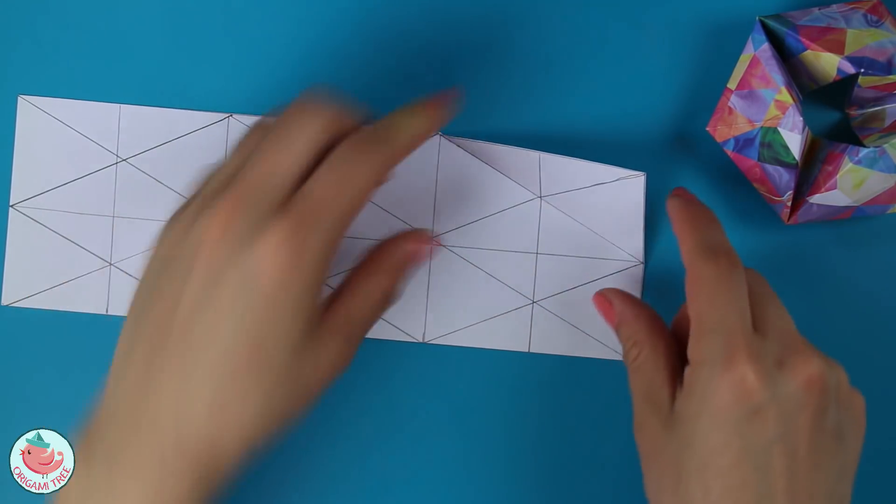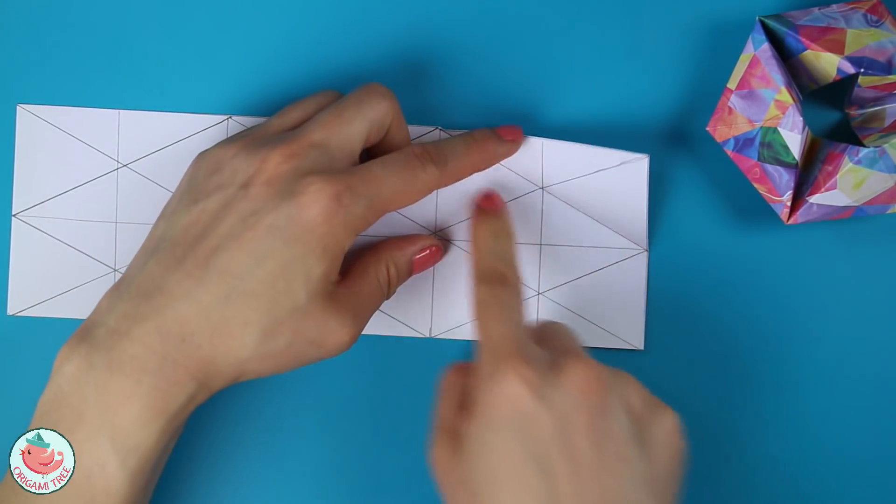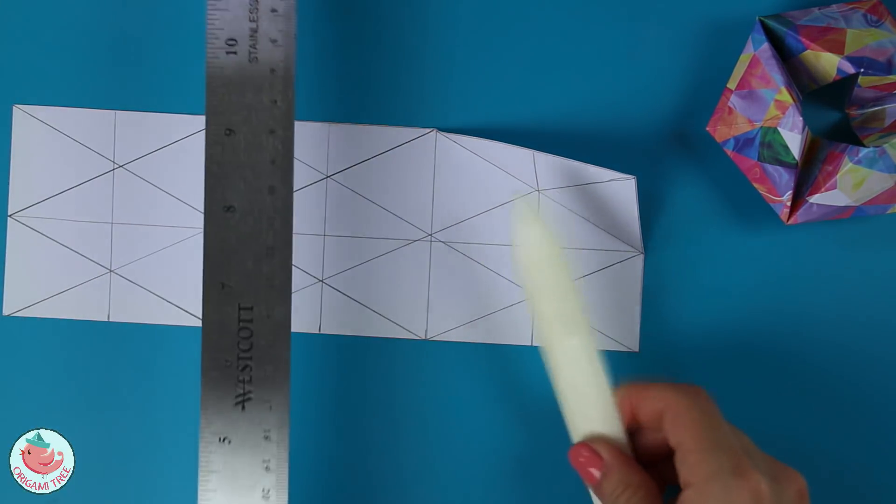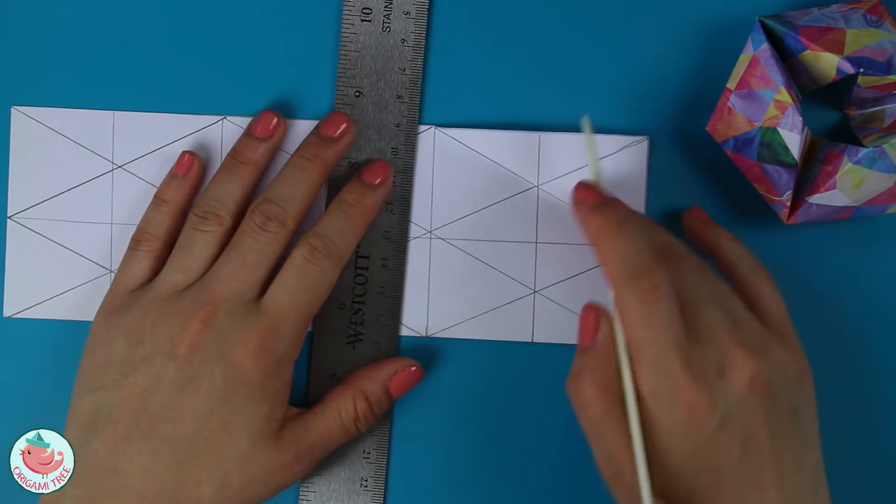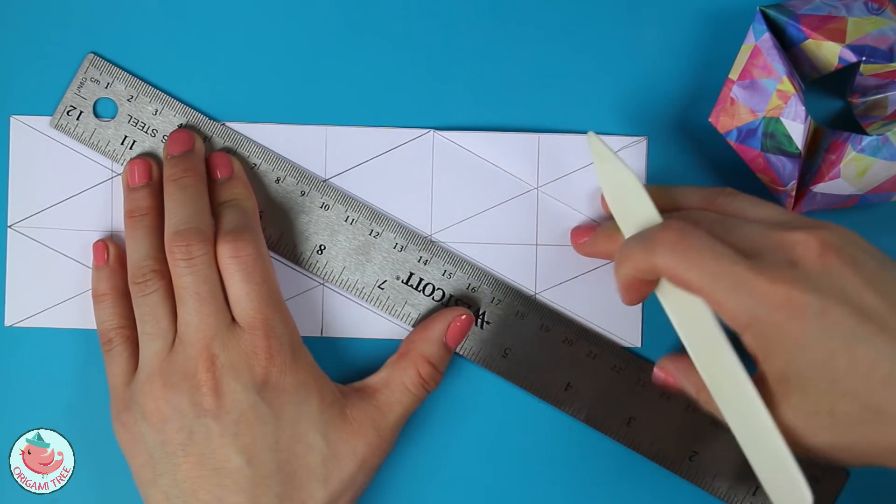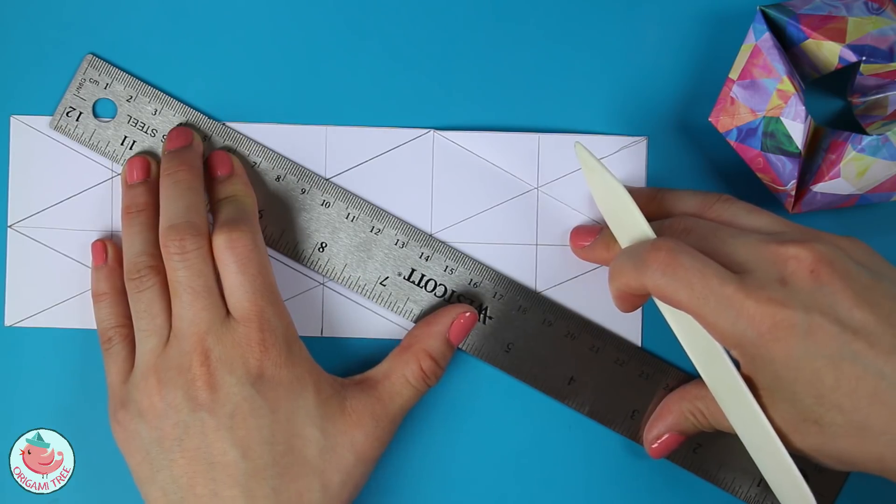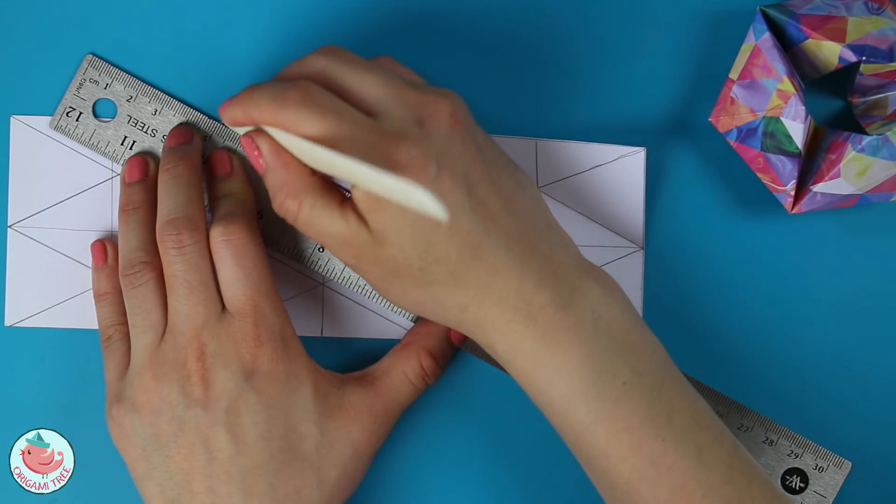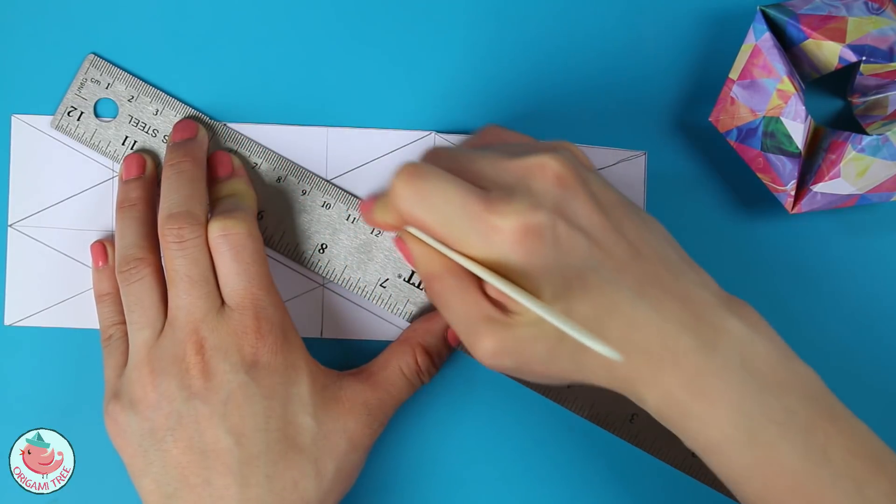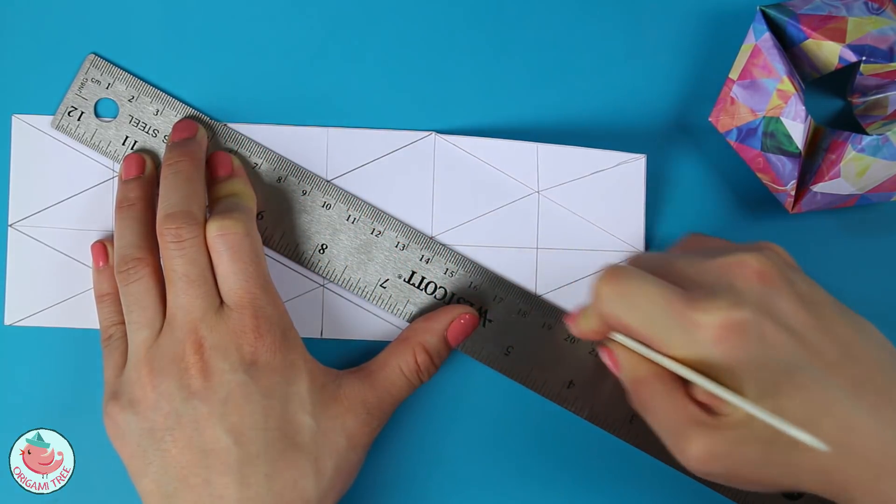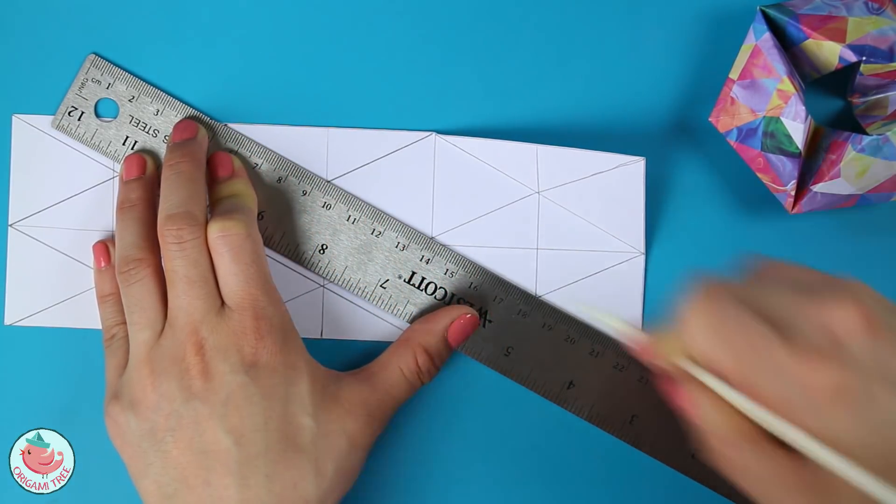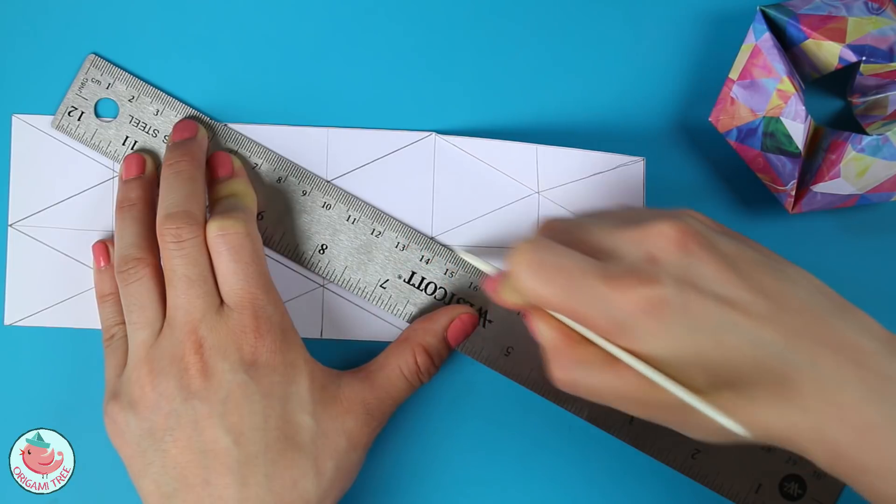So one trick that I like to do, because when you're folding towards yourself you can't really see the crease that you're folding at, I like to take a ruler and a bone folder, especially if the paper is really thick. And I like to trace the creases with a ruler and bone folder before I make the creases. So this also helps you to make straighter folds if that makes sense, because you're already pre-creasing with a bone folder. Just like that. And if you don't have a bone folder, you can use a credit card or something like that.